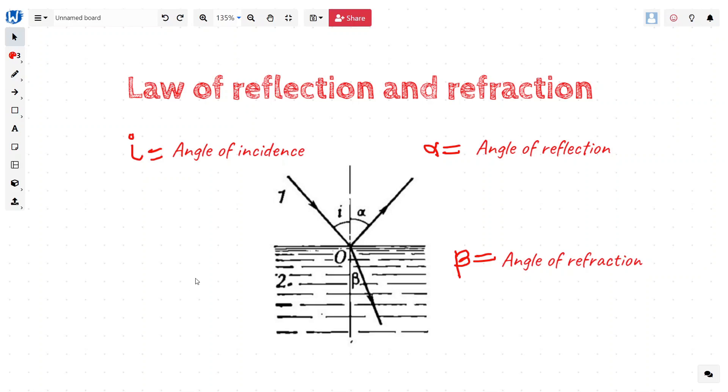Now, the obvious question to ask is that if the light is coming like this, how much of that light energy is getting reflected and how much is getting refracted? So, let's try and figure that out.